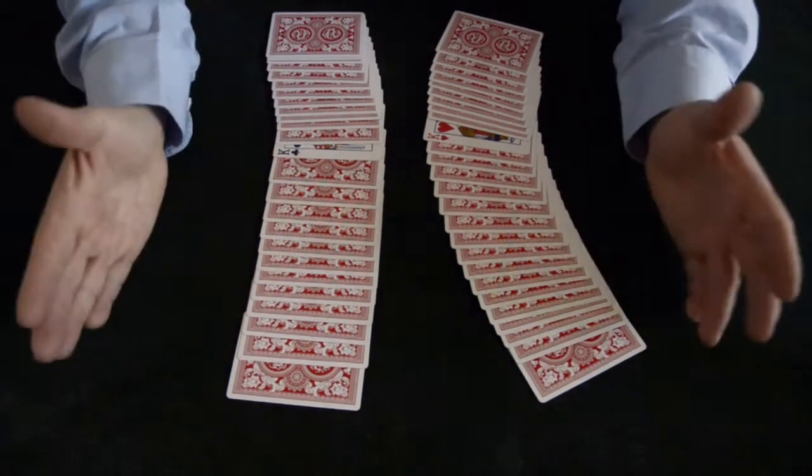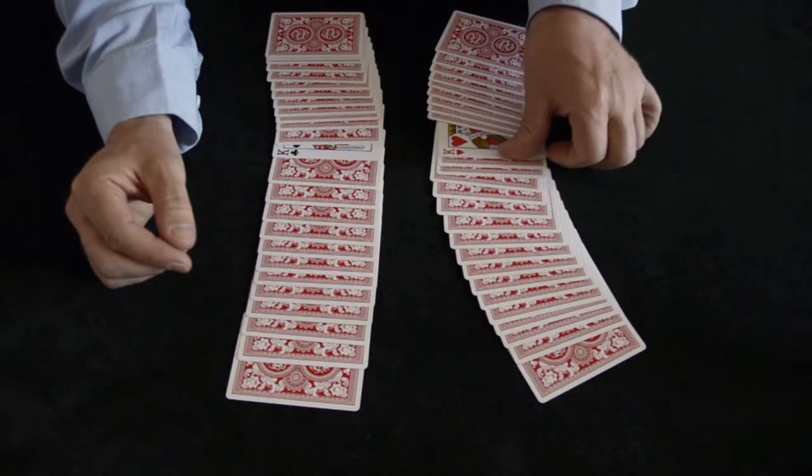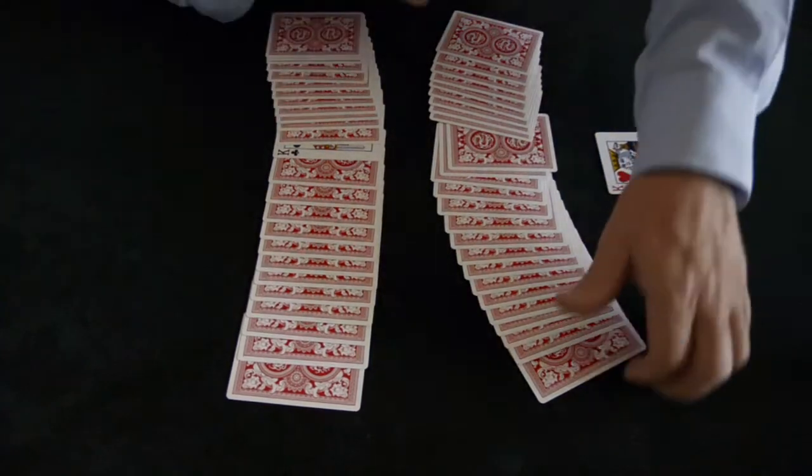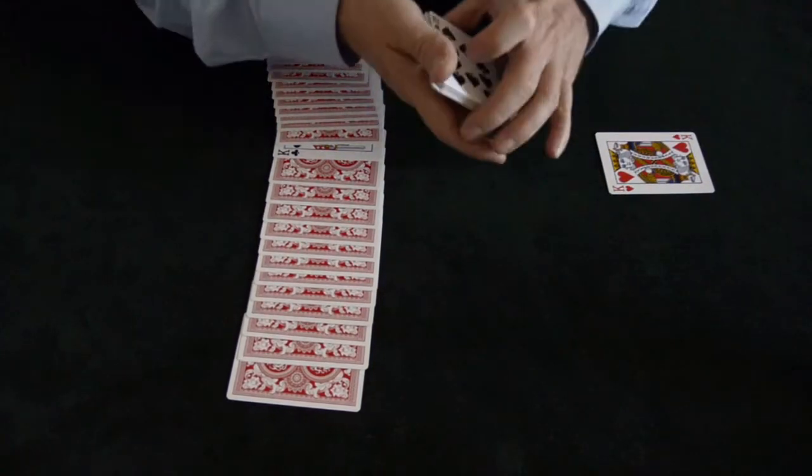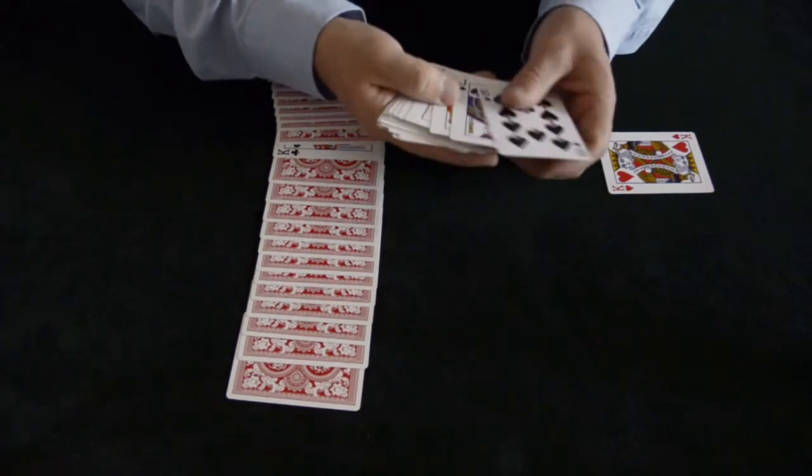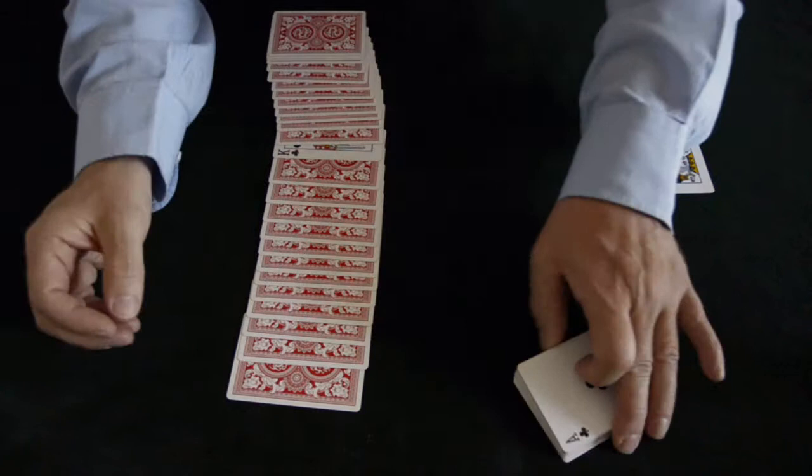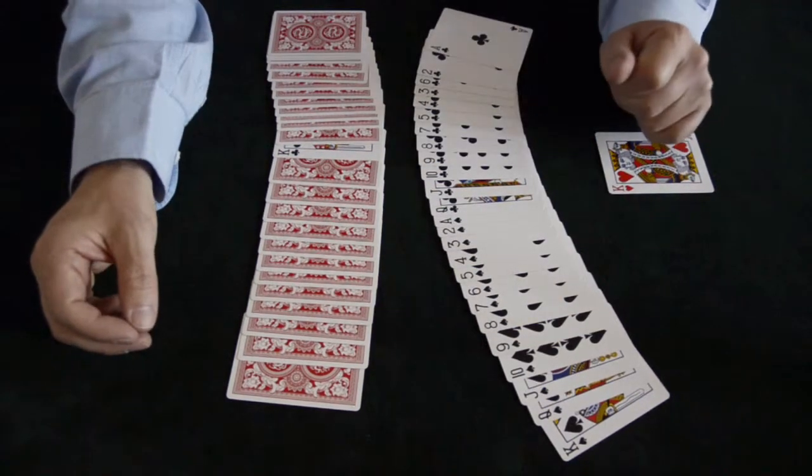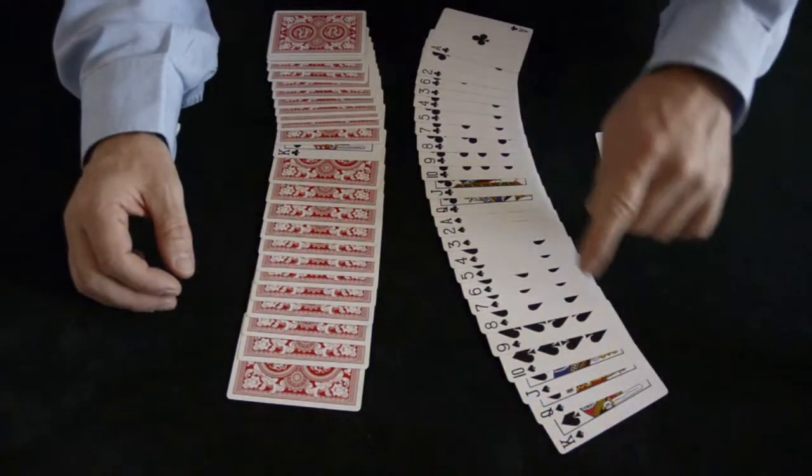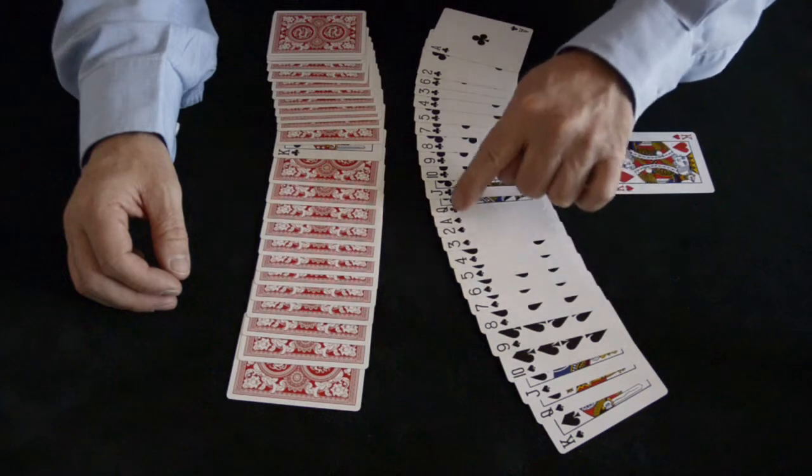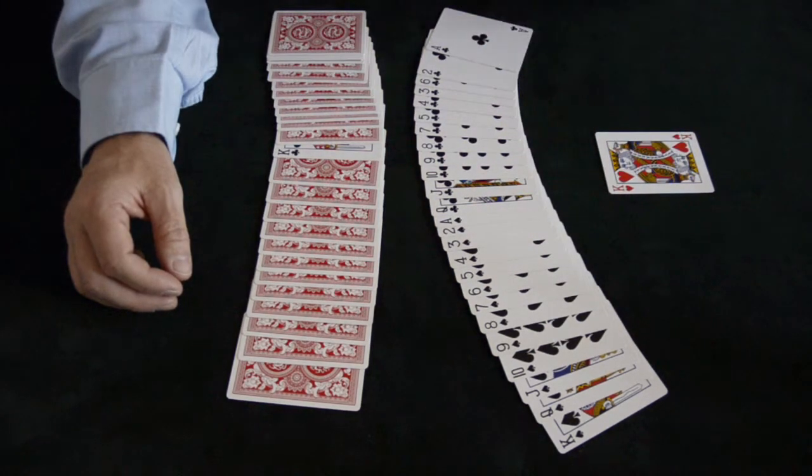So although this is a red king, you can see, unbelievably, it just happened to be the only red card in an otherwise black half of the deck. And I don't know if you can notice, but every single card also is in perfect suit order, just like there when they're brand new out of the box.